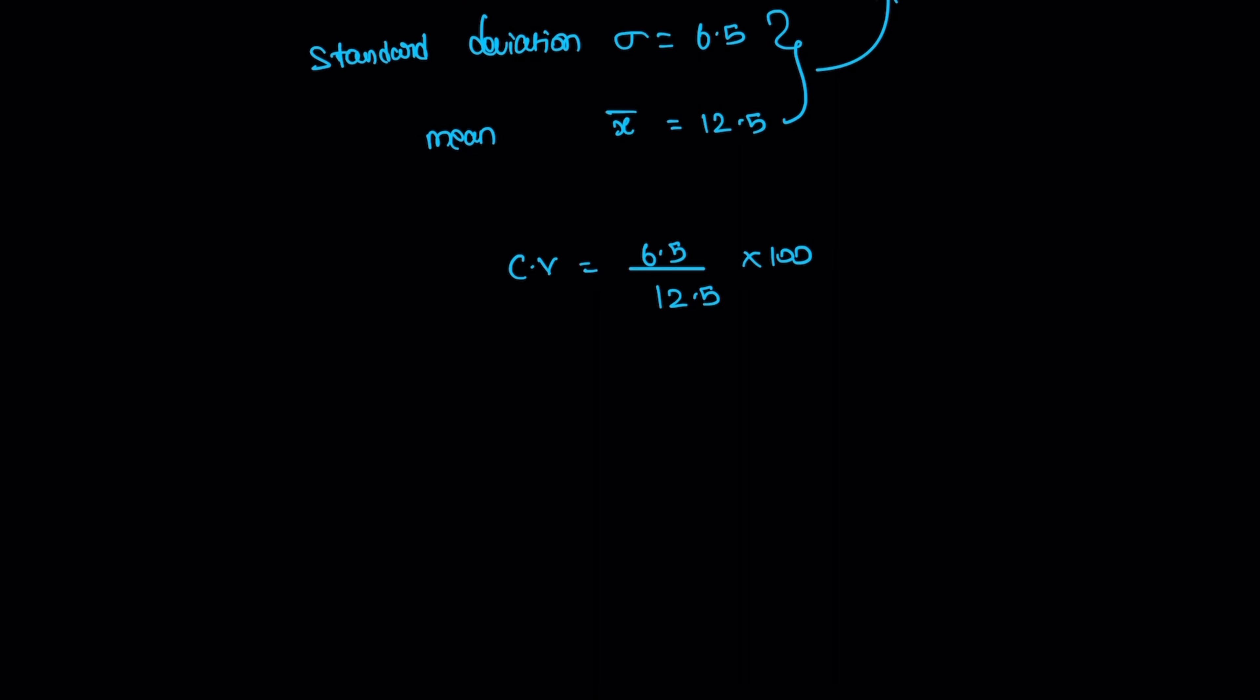Now, if we have decimals, we convert to whole numbers by multiplying by 10. So we have 65 divided by 125 times 100.